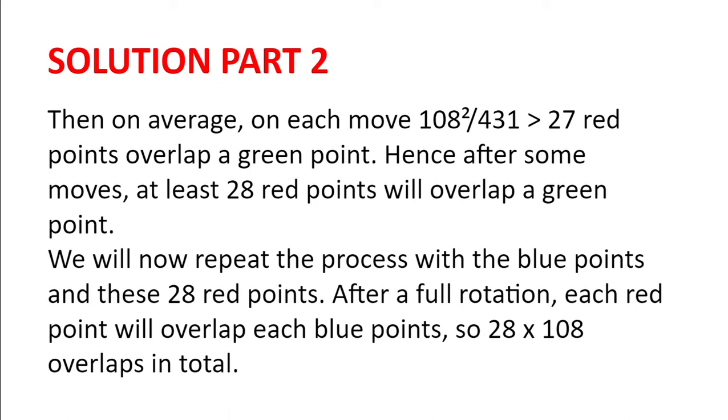Hence, after some time, at least 28 red points will overlap a green point. We can choose any three of these 28 pairs of points to create two congruent triangles. The fact we have rotated the triangle doesn't matter, as it doesn't affect the shape of the triangle.